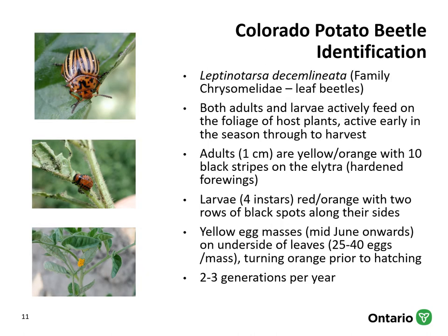Colorado potato beetle are from the family Chrysomelidae, or leaf beetles — a family associated with a significant number of pests in agricultural crops. Both the adults and the larvae actively feed on the foliage of host plants. They are active early in the season all the way through harvest. The adults are about a centimeter in size, yellow to orange, with 10 black stripes on their elytra. The larvae, of which there are four instars, are a reddish-orange color with two rows of black spots along their sides. The yellow egg masses can be observed from mid-June onwards on the underside of leaves, usually containing 25 to 40 eggs each, turning orange just prior to hatching.